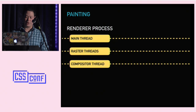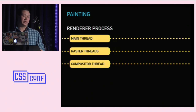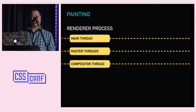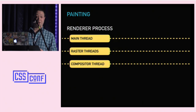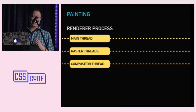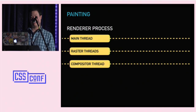Everything shown so far has occurred within the renderer process, which has multiple threads running within it. Threads are your browser's way of splitting up work and potentially doing it simultaneously. Everything so far has happened on the main thread except for rasterization. JavaScript is a big one also on the main thread — the main thread is typically your source of a performance bottleneck because of how much is going on there. Chrome will actually offload rasterization to raster threads, and it's very common to have multiple raster threads running at the same time. The compositor thread acts as the dispatcher, assigning work to other threads and coordinating between them.